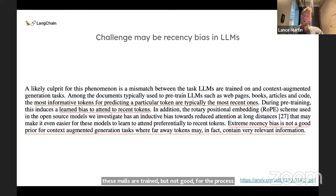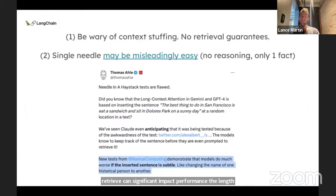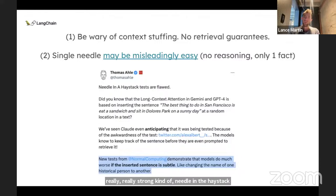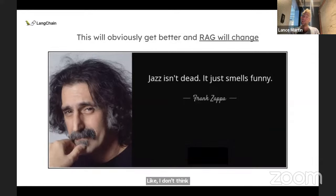This was also observed by Greg Kamradt in his independent needle-in-haystack testing. Some folks mentioned a possible recency bias in LLMs — when attending to the next token, you may learn a bias to attend to recent tokens, which is great for next token prediction but not for RAG retrieval. The key point is I don't quite trust what LLM providers say in terms of retrieval quality. The number of tokens you're trying to retrieve, the length of context, and whether the needles are very different from the background context can all significantly impact performance.